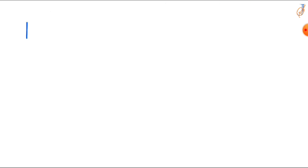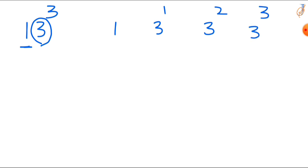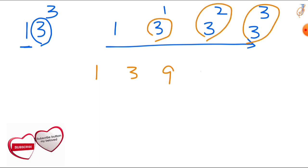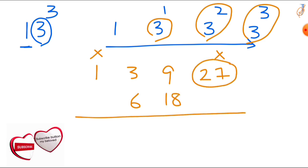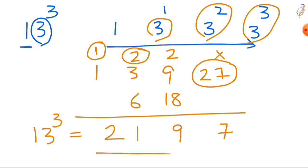Take 13 cubed. The first digit is 1, take 1. For the digit 3 write: 3 power 1, 3 power 2, 3 power 3 — values are 1, 3, 9, 27. Skip first and last and double the middle digits: 3 doubled is 6, 9 doubled is 18. Adding: write 7 from 27 and carry 2; 18 plus 2 plus 9 is 29, write 9 carry 2; 6 plus 3 plus 2 is 11, write 1 carry 1; 1 plus 1 is 2. So 13 cubed is 2197.